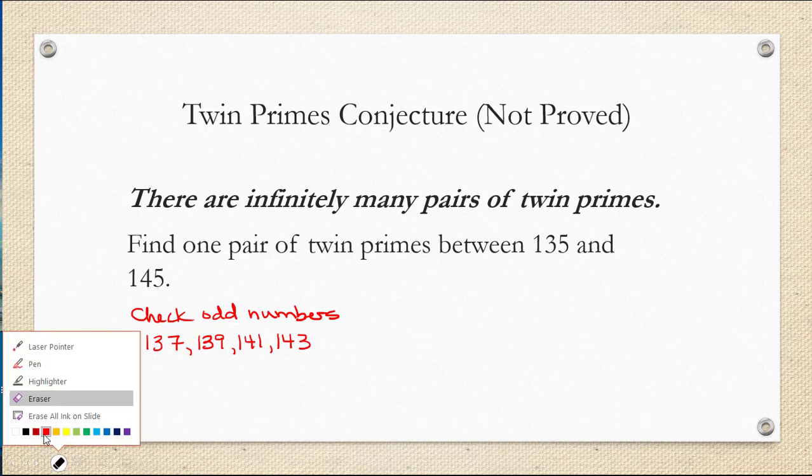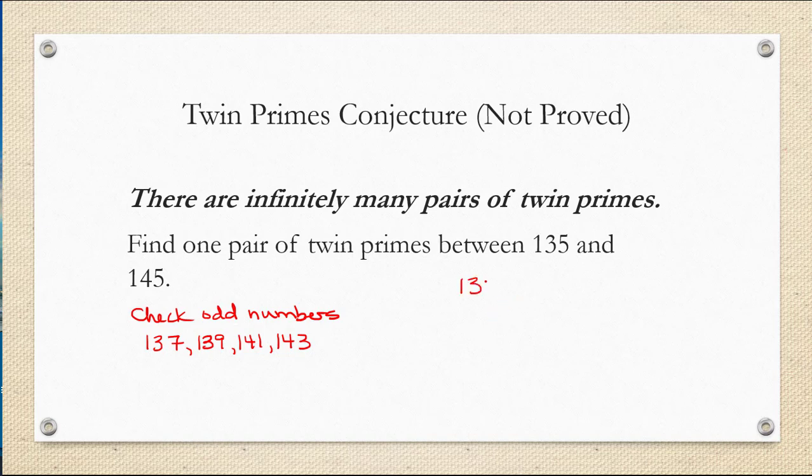So let's check to see if the number 137 is prime or composite. Composite just means it's divisible by a number other than one or itself. To check if 137 is prime or composite, we're going to methodically check if it's divisible by any primes up to a certain number.